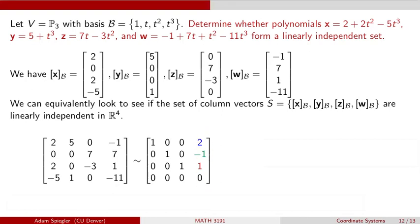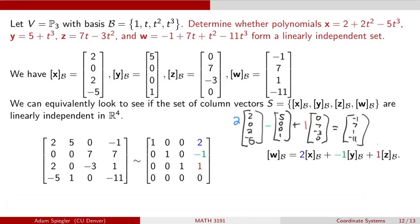And so from this reduced row echelon form matrix, we can see that there are weights that we can use to combine the first three vectors in order to get the fourth vector. Right, so in particular, if we take 2 times XB minus 1 times Y sub B plus 1 times the B-coordinates for Z, then when we add these three vectors together using these three weights,